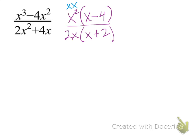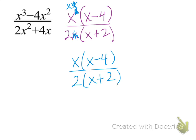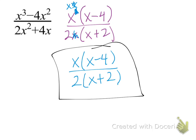Remember that x² is just x times x, so we can cancel one factor of x from the numerator and denominator — reducing the exponent from 2 to 1. We're left with x(x - 4) in the numerator and 2(x + 2) in the denominator. Nothing else cancels, so that is our answer.